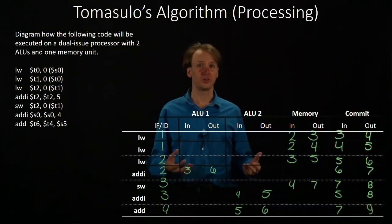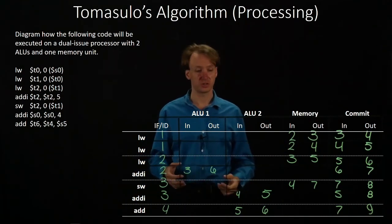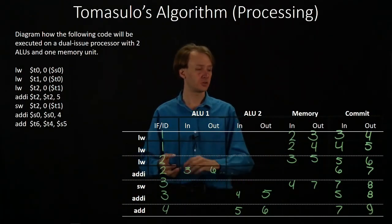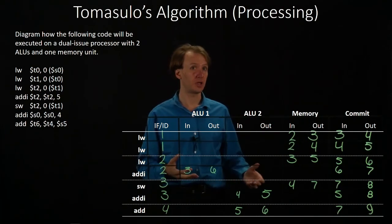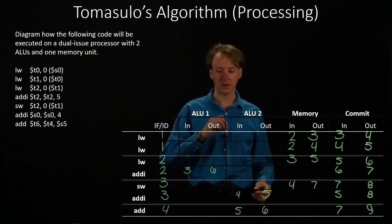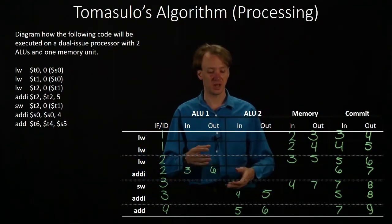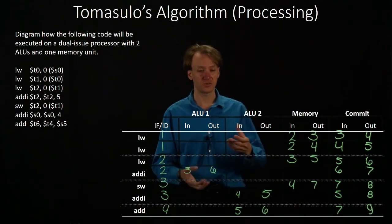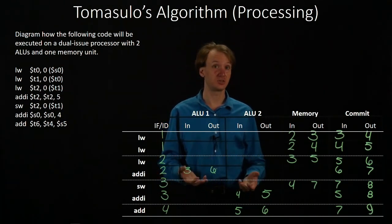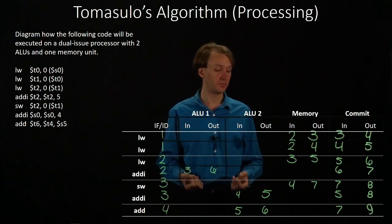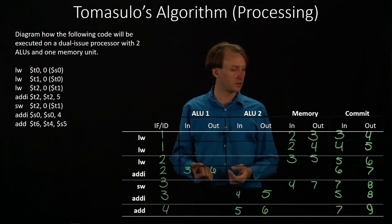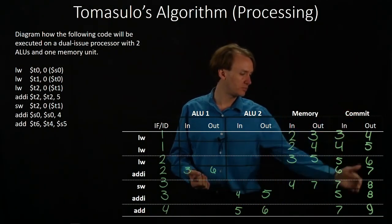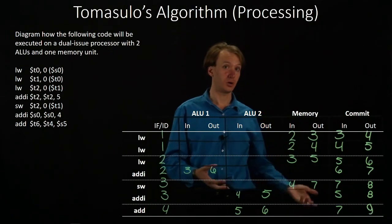So that is how this list of instructions would be processed through our processor. Most of our instructions are going off to the memory unit. A handful of them are being sent to each of the ALUs. We have some option about which individual ALU we send these instructions to. The only other thing we needed to ensure was that we committed all of our instructions in order — we issued all of them in order, and we commit them all back in order.